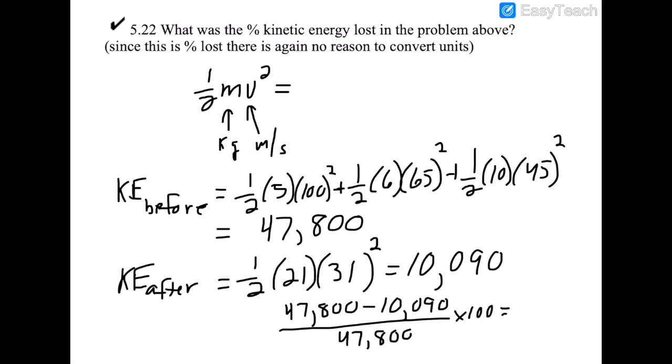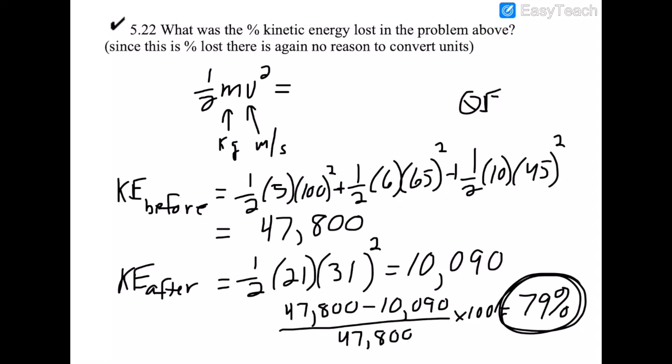That works out to about 79% energy lost. We lost a huge amount of energy in this perfectly inelastic collision. That's how you do both problems — no grid needed, no full unit conversions. Hopefully it was easier than expected.